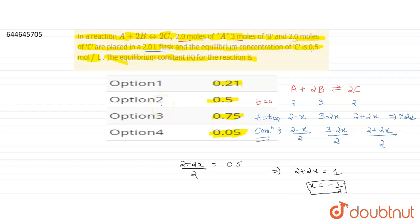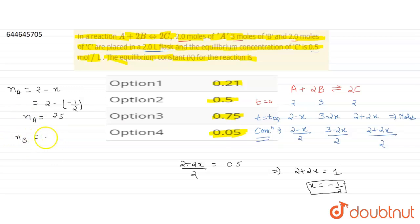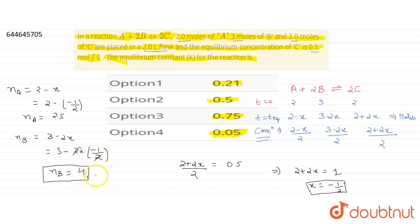Now we find the moles at equilibrium. Moles of A = 2 − x = 2 − (−1/2) = 2.5 moles. Moles of B = 3 − 2x = 3 − 2(−1/2) = 3 + 1 = 4 moles. Moles of C = 2 + 2x = 2 + 2(−1/2) = 1 mole.